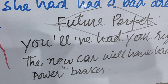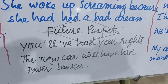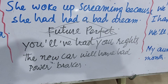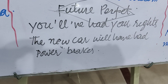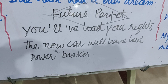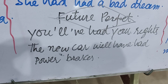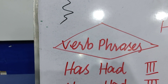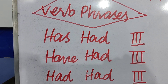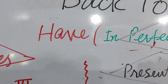Will have کی structures: 'You will have had your rights' — تمہیں تمہارے حقوق ملیں گے — یعنی you will have received / taken / held your rights۔ 'The new car will have had power brakes' — نئی car میں power brakes include ہو چکے ہوں گے — یعنی the new car will have included power brakes۔ تو آج کے main key structures تھے: has had، have had، had had، اور will have had۔